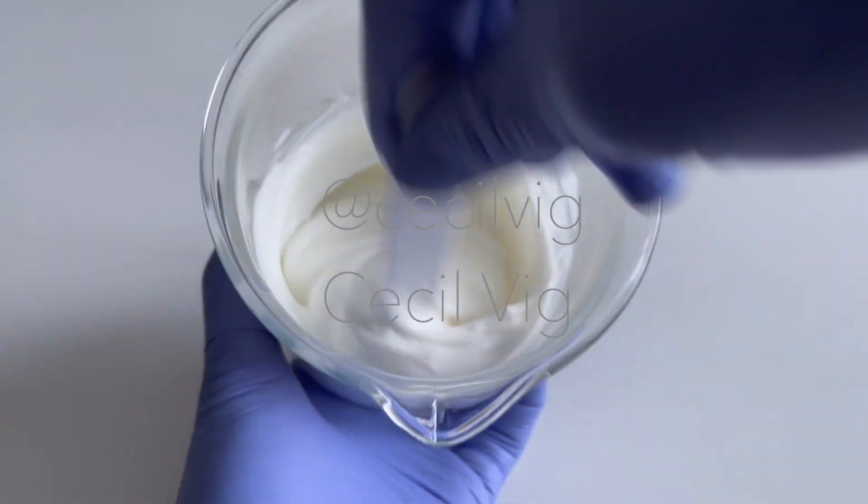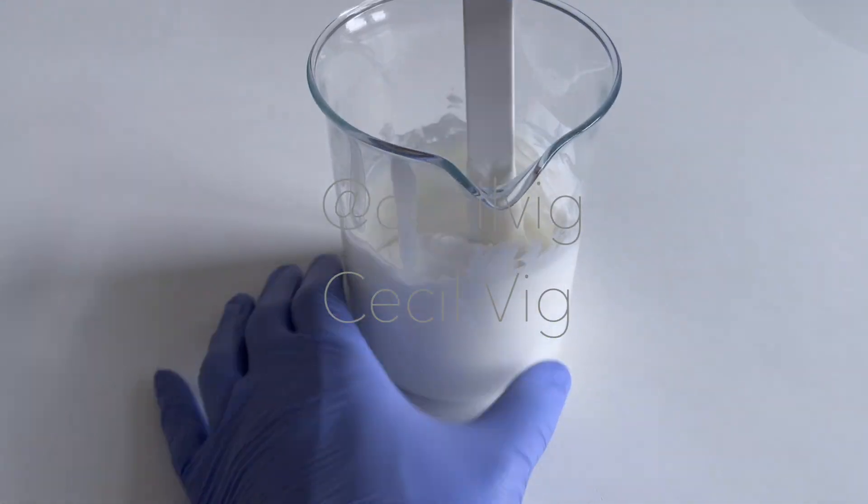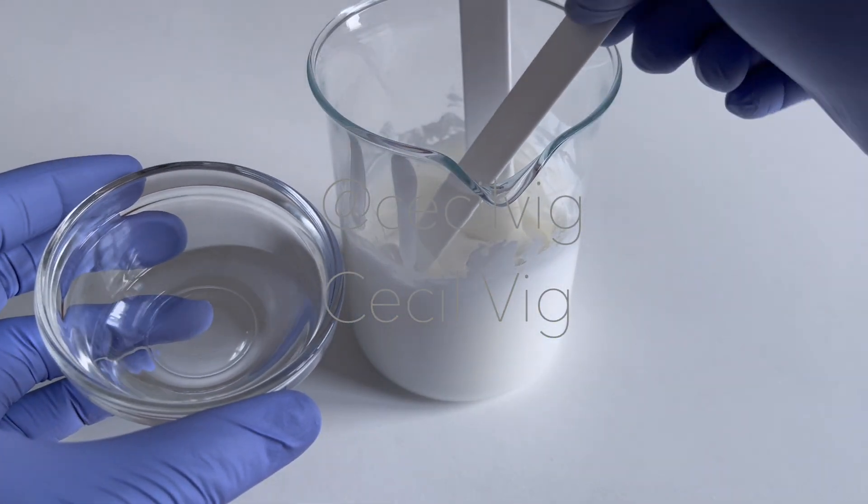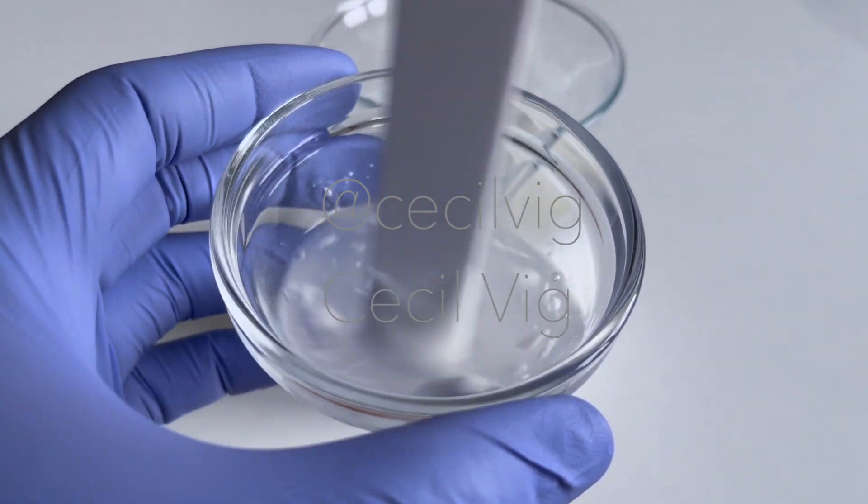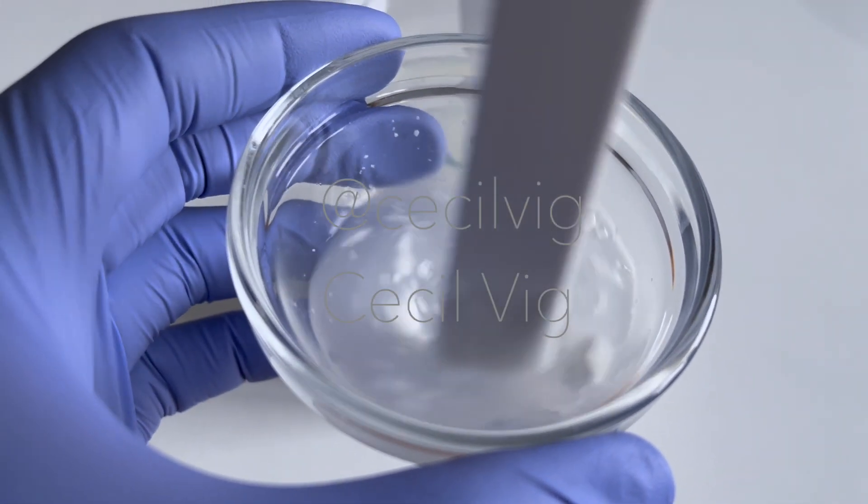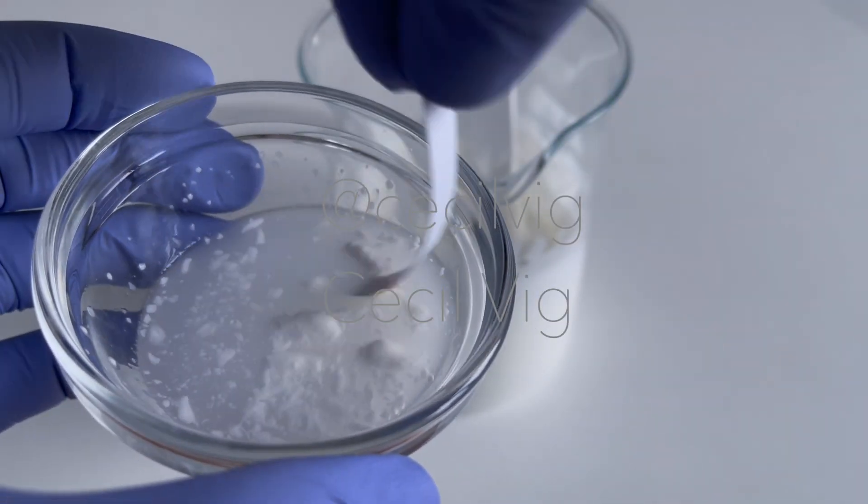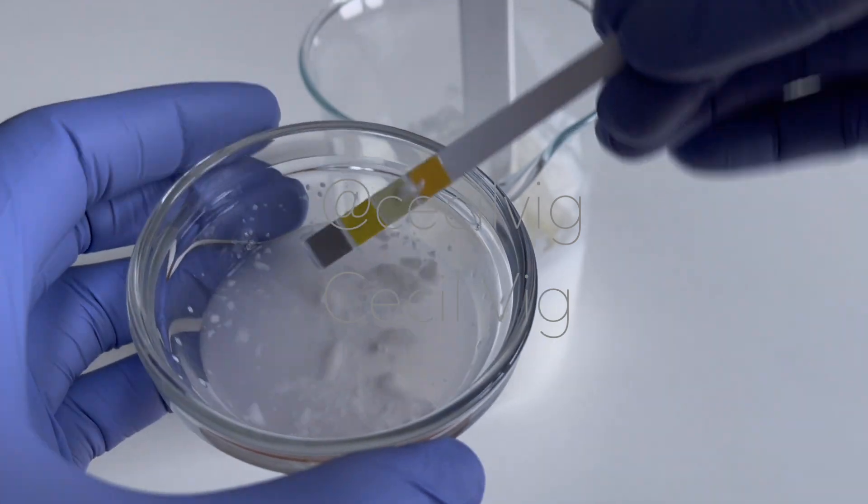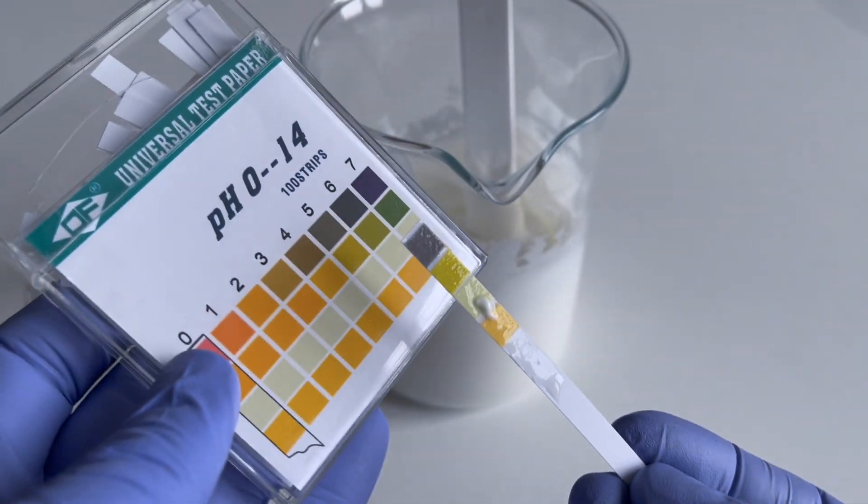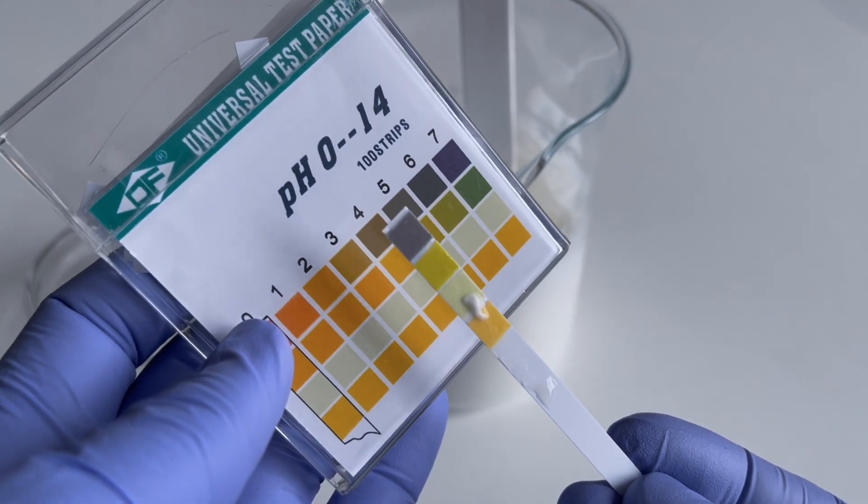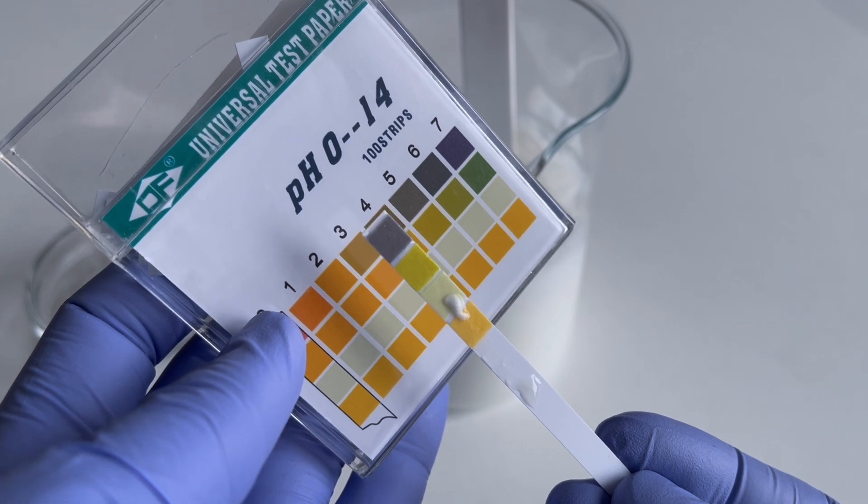After mixing in the preservative, we test the pH value of the cream. To test the pH value, I add 2g of the cream to 8g of distilled water, mix well, then dip my pH strip into the mixture for some seconds. Remove it and see what the pH value is. As you can see, the pH value is around 5.5. I wish to lower it to around 5.